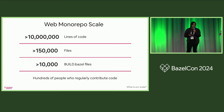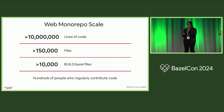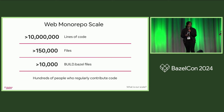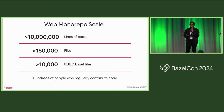Our web monorepo is the home to airbnb.com, as well as various applications, tools, and libraries. We maintain over 10 million lines of TypeScript and JavaScript code, over 150,000 files, over 10,000 build files, and there are hundreds of people who are regularly contributing code. One thing to call out is that files to build files are not evenly distributed — our packages can be really large or really small.